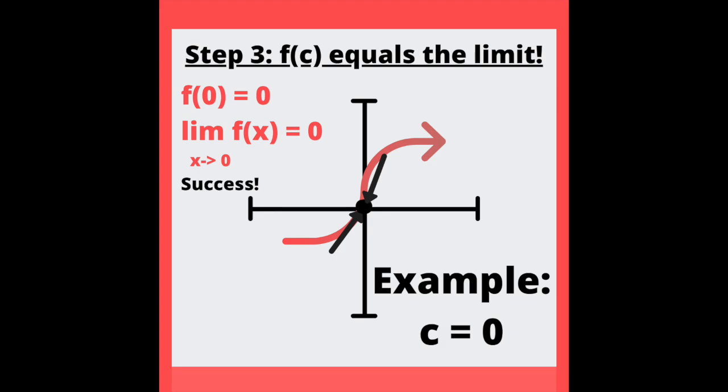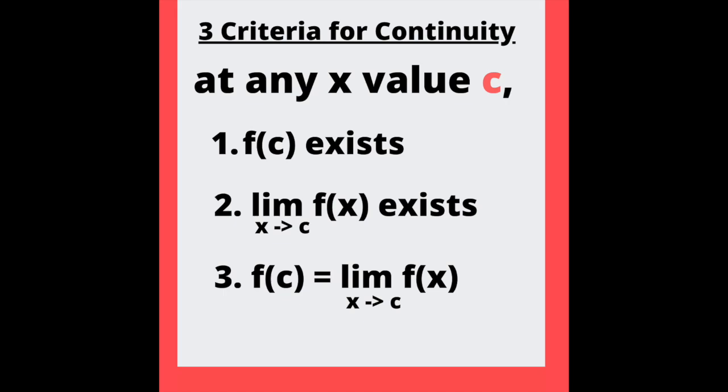There are three ways to show that a point is continuous. Three ways to know that you will ace this on the test. If you are proving continuity, get all three. If you are proving against, disprove one for victory.